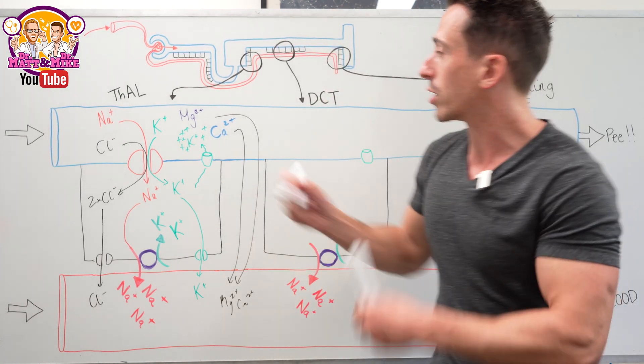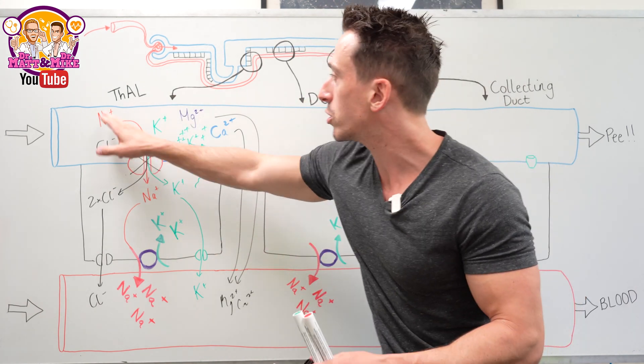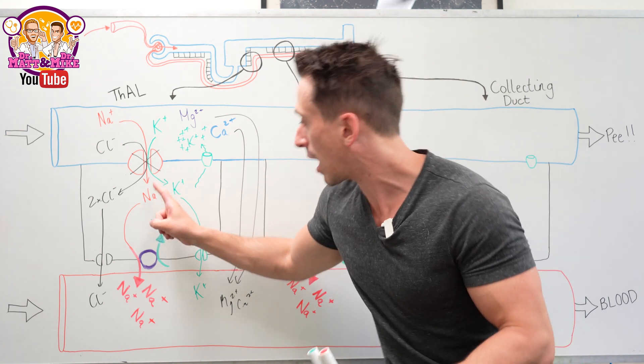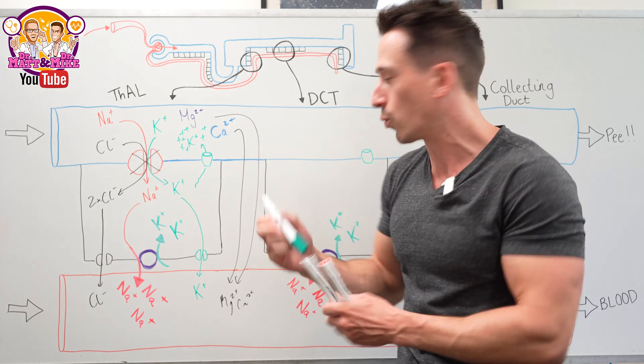Now loop diuretics—how do they work? They inhibit the sodium-potassium-chloride channel, so chloride, sodium, and potassium stay in the tubule. This means sodium can't be thrown out through the pump in exchange for potassium, so potassium stays outside as well.